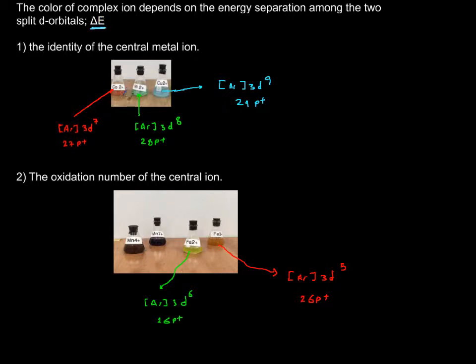One variable that affects that is the identity of the metal itself. If you look at cobalt versus nickel versus copper, you see they have different colors.